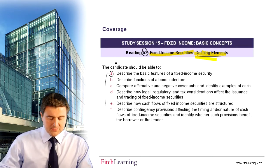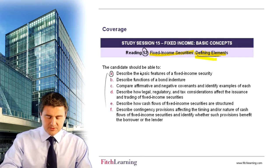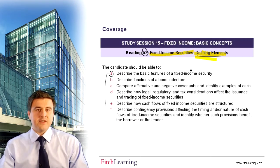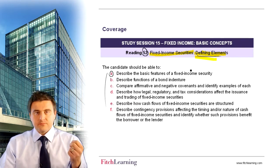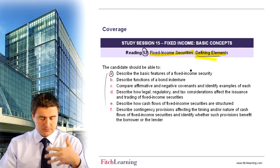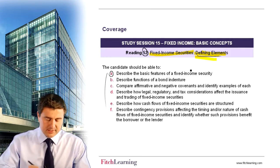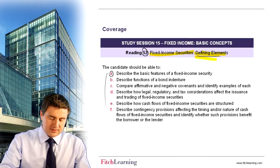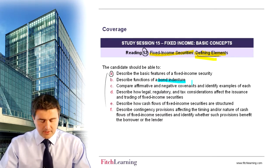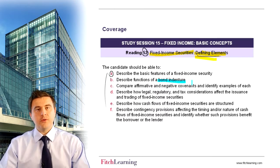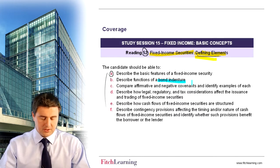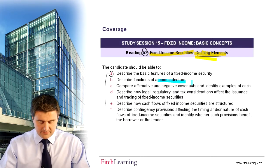So you can see here, one of the first learning outcome statements is to describe the basic features of fixed income security — for example, the maturity, the coupon. We'll talk about those concepts. Then identify the terms and conditions of the bond, known as the indenture. And then we move into how we can construct covenants within the indenture that could be affirmative or negative.